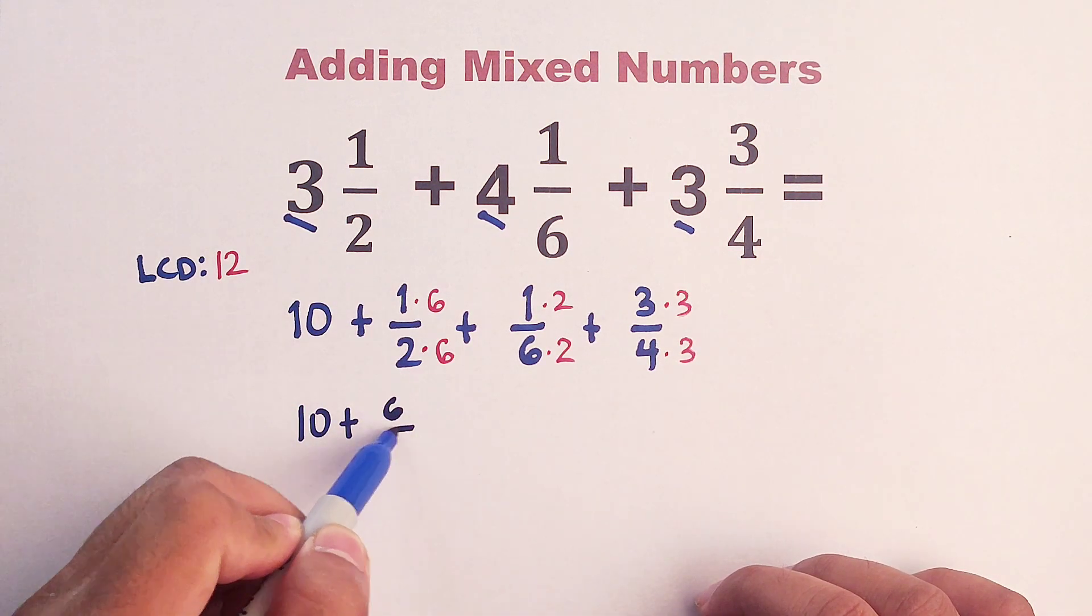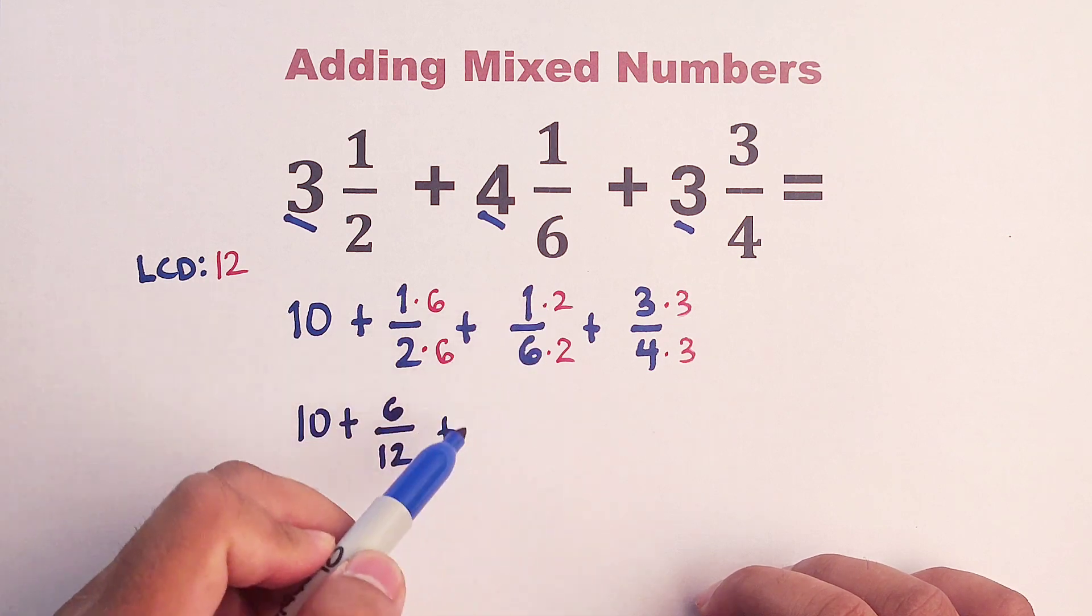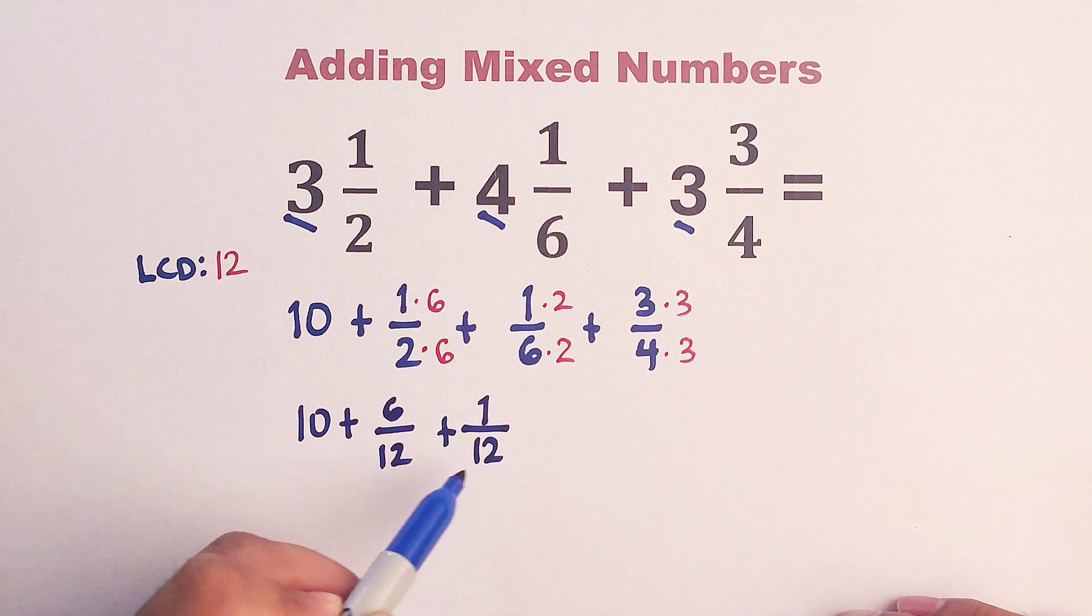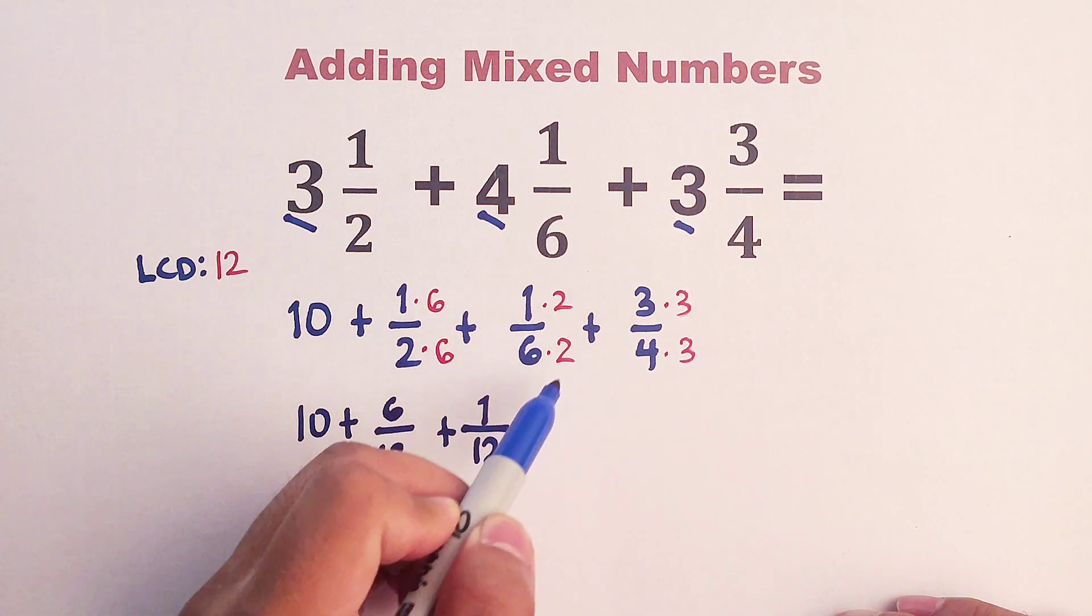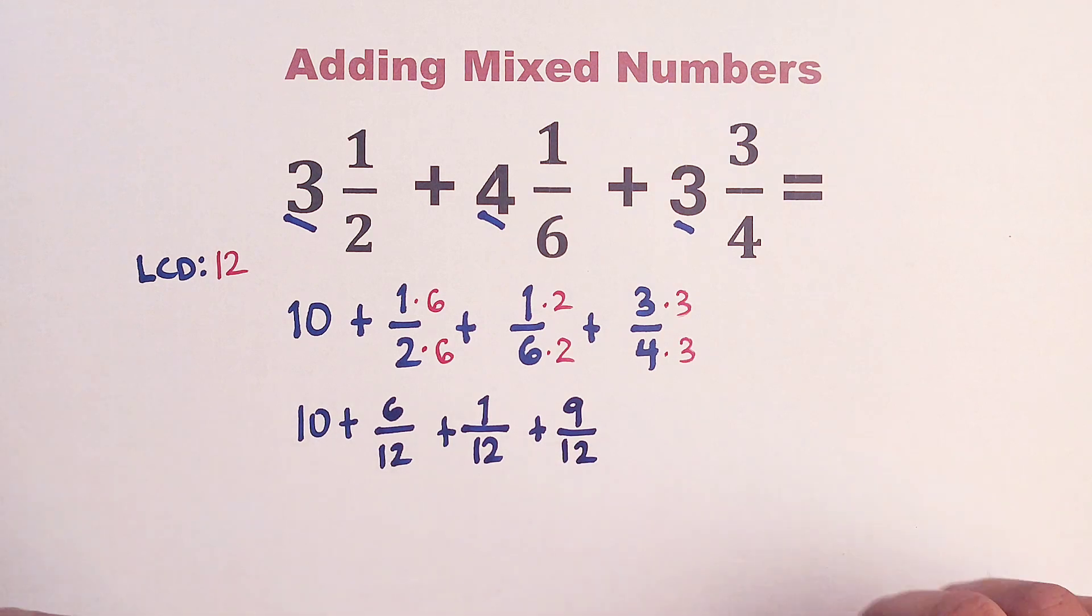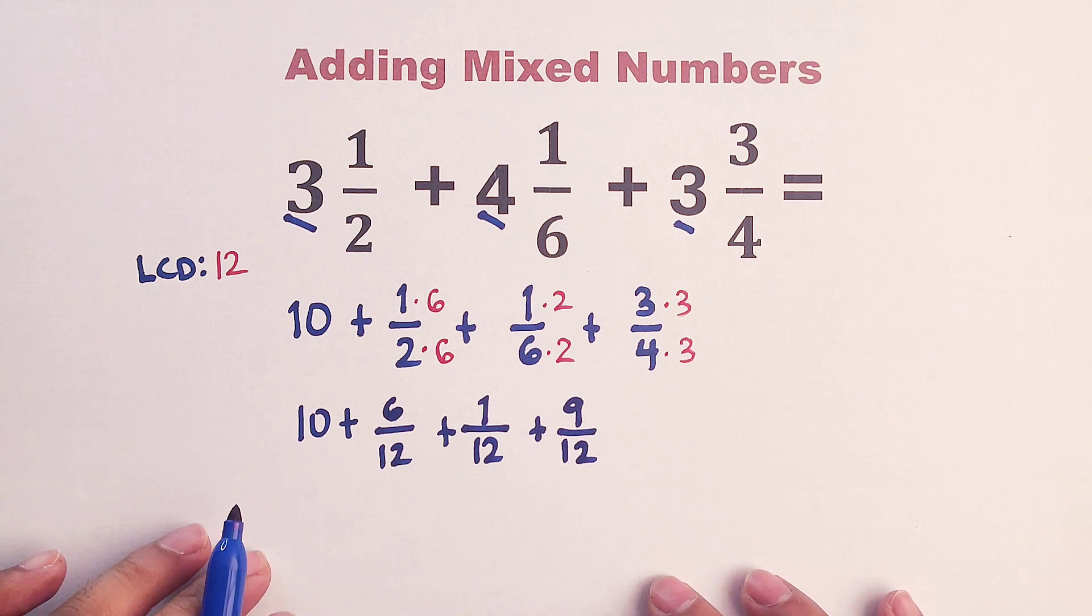this is six over 12. Plus, one times two, that is two over 12 also. Next is plus, this is nine over 12. And since the denominators are the same, we can now easily add the fractions.